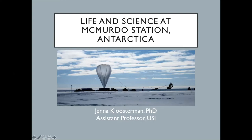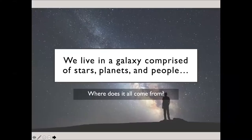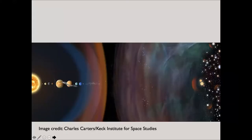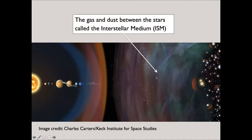This right here is the part I've worked on. So what exactly were we doing down there? Let's first talk about the science. We live in a galaxy comprised of stars, planets, and people. So where does it all come from? Here's our sun and all the planets, and then we've got the galaxy. This is kind of an art depiction of the gas and dust in the galaxy, and this gas and dust follows a life cycle.